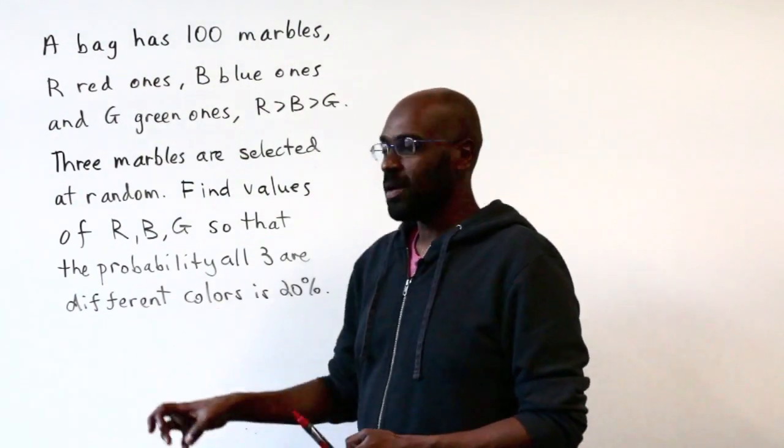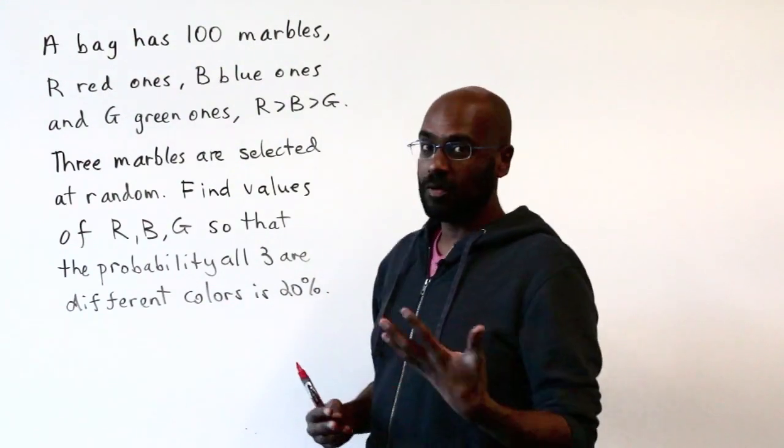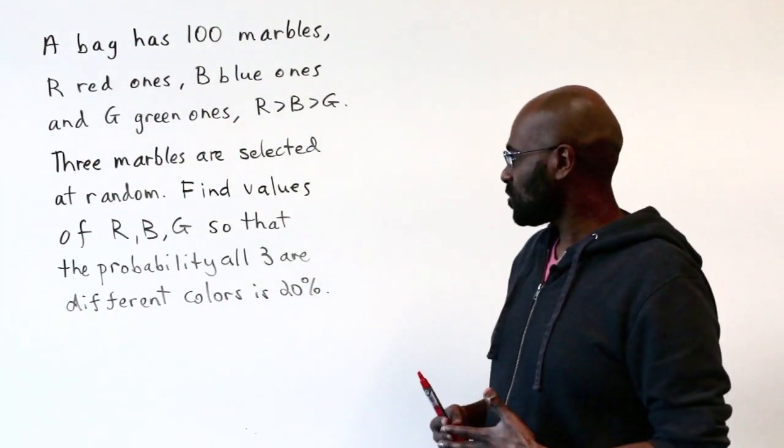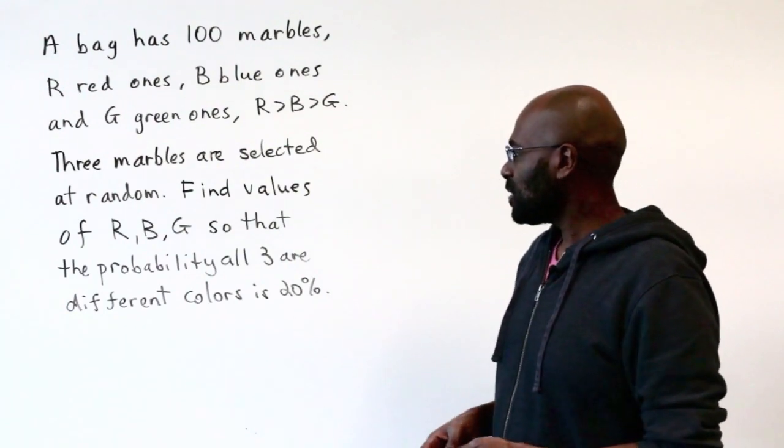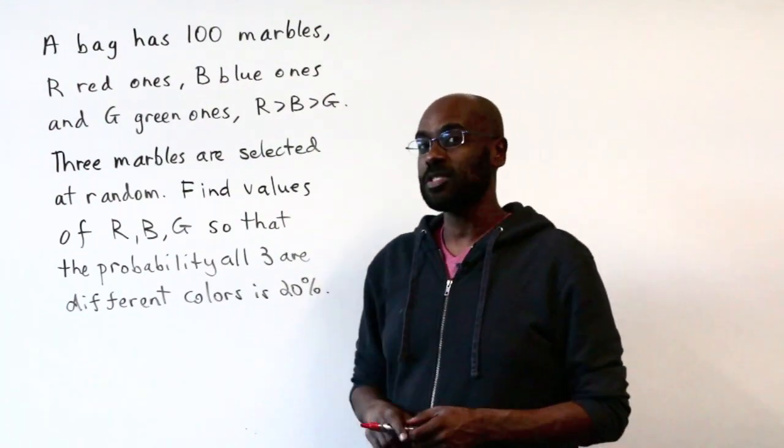Three marbles are selected at random, and it asks you to find the values of R, B, and G, the number of red, blue, and green marbles respectively, so that the probability all three that you chose are different colors is exactly 20%.